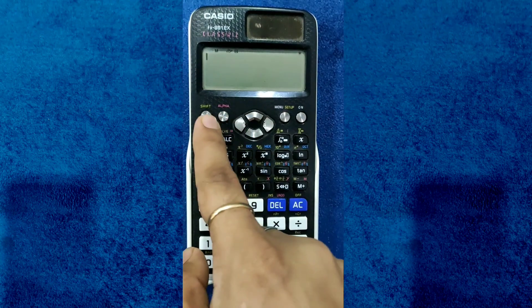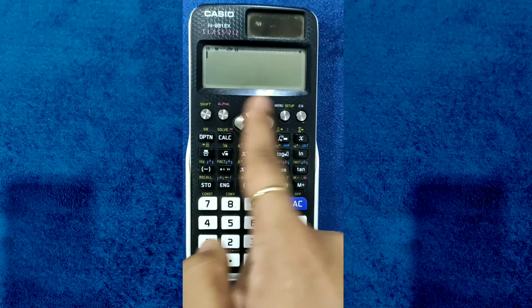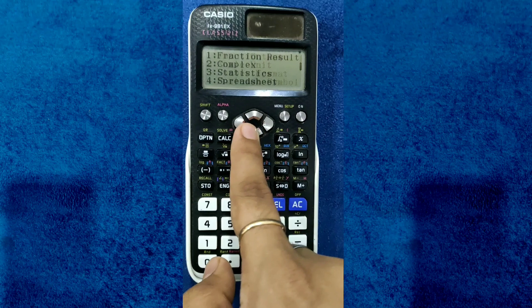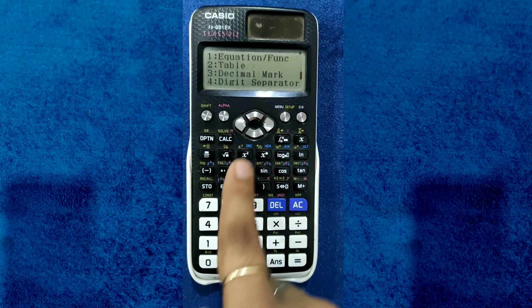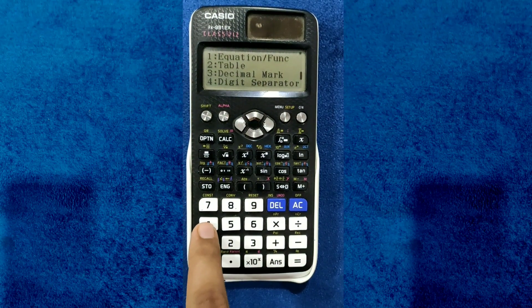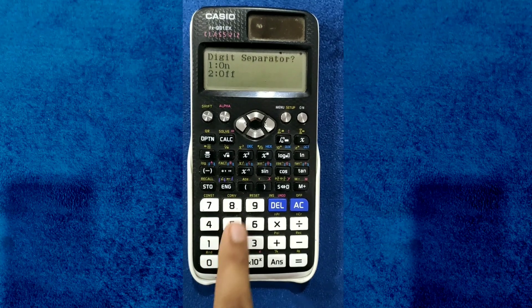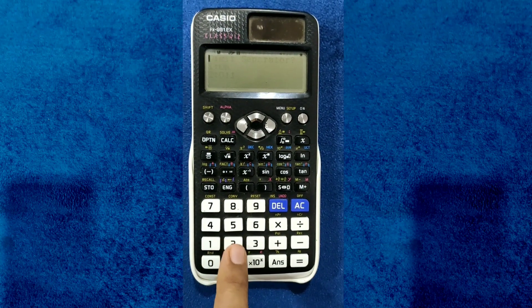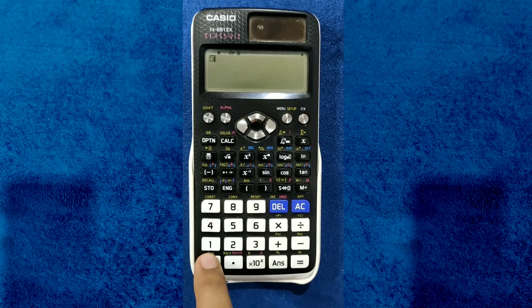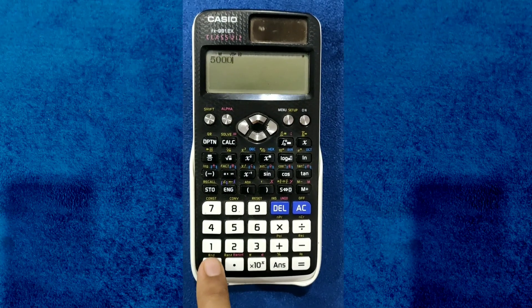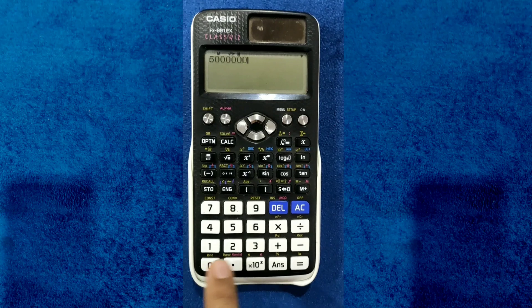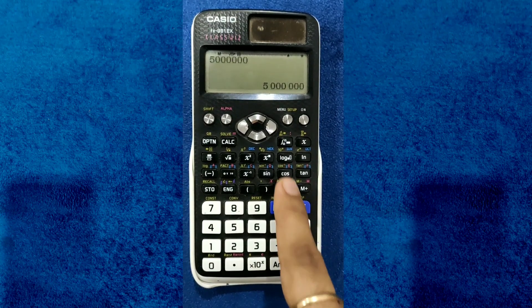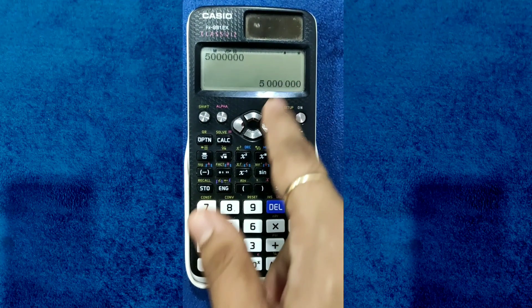Go to Setup, Shift Setup, scroll down below, go to Digit Separator, hit 4, turn it on by pressing 1. Now let's see again. Hit equal. You can see the digits are separated. That's how you enable the digit separation mode in your scientific calculator.